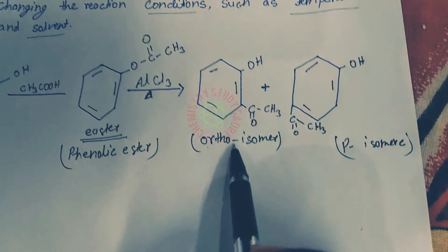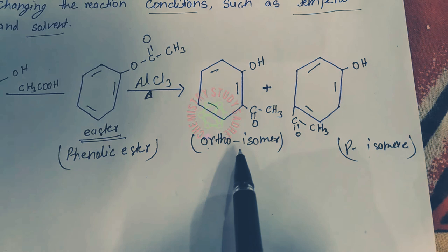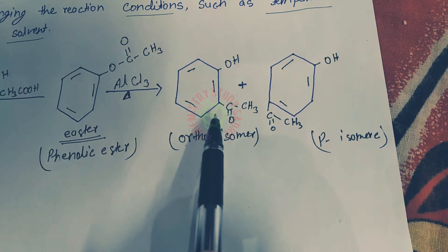Generally, low temperature favors para isomer as the major product, and high temperature favors ortho isomer as the major product.